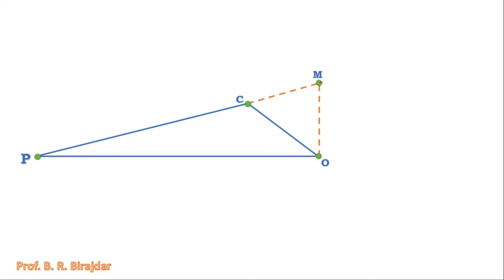Where the two lines cross, we mark point M. This gives the velocity triangle OCM. The line CO represents the velocity of C with respect to O. The line OM represents the velocity of P with respect to O — that is, the piston velocity. The line CM represents the velocity of P with respect to C, which is the velocity of the connecting rod.